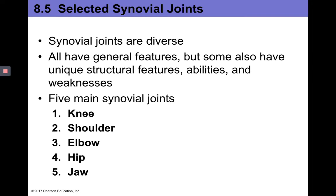Next we'll look at five selected synovial joints — the knee, shoulder, elbow, hip, and jaw — examining their features and how they differ. Even though these joints are quite varied, keep in mind they are all synovial joints and all have joint cavities.